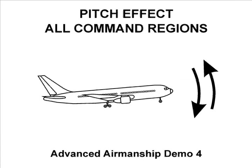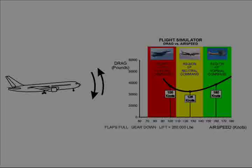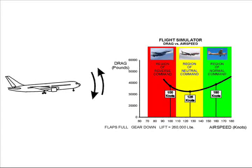This is demonstration number four from the Aviation Textbook Advanced Airmanship, Book 1, Precision Flying. This demonstration combines the results of demonstrations 1, 2, and 3 and compares pitch-only corrections and coordinated pitch and power corrections for all three command regions.